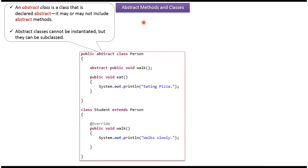In this video tutorial, I will cover abstract method and abstract class. Here you can see the Person class, which is declared with the abstract keyword, so this Person class is abstract. An abstract class can contain abstract methods and non-abstract methods. We cannot instantiate this Person class because it is abstract, but it can be subclassed.